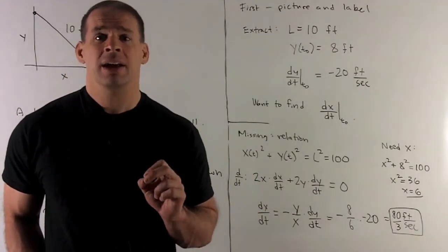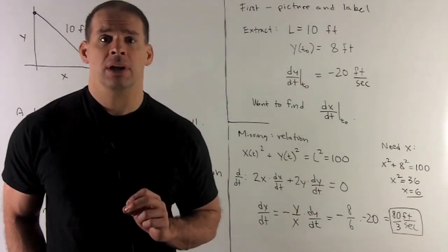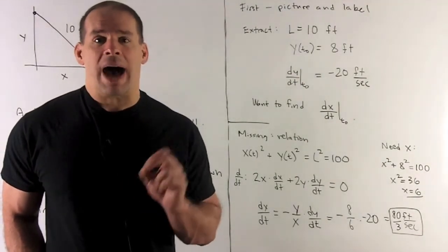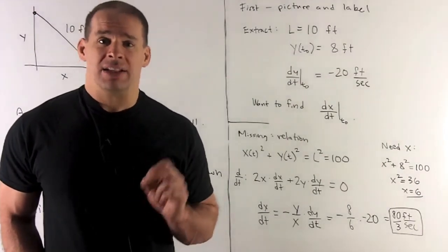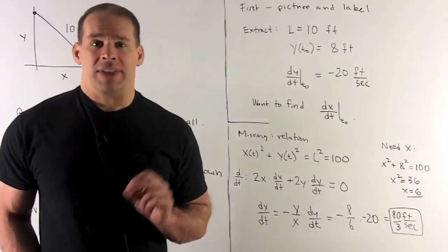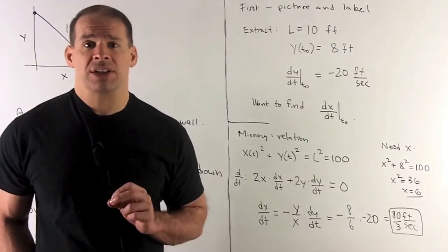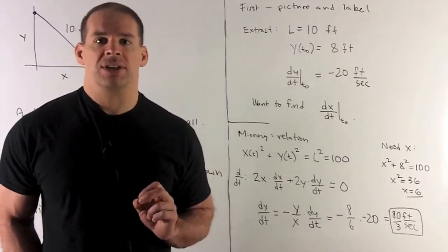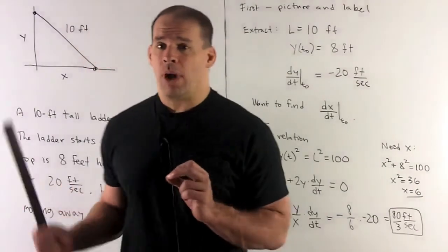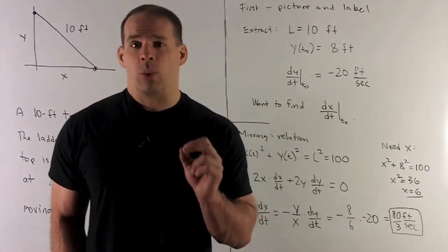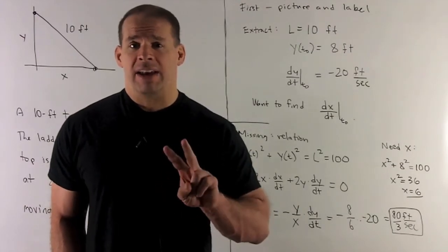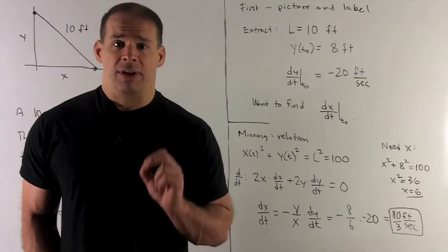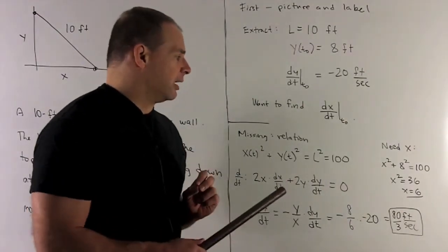Now I can isolate dx/dt — that's what I'm trying to solve for. On the right-hand side, I have y, which equals 8 feet, and dy/dt, which equals minus 20 feet per second. I'm missing x, so I use our relation to solve for x: x² + y² = 100, y = 8, giving x = plus or minus 6. I'll go with plus 6, because I set up my triangle so x is always positive. Now I have everything I need, and the answer is 80/3 feet per second.